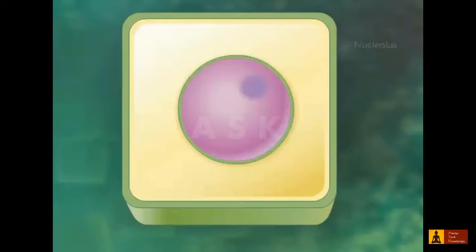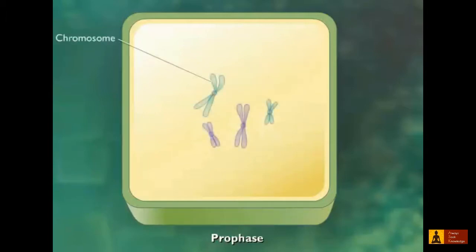Mitosis is a process of nuclear division in which the duplicated chromosomes separate to form two genetically identical daughter nuclei. During prophase, the nuclear membrane disintegrates and the nucleolus disappears. As prophase continues, the chromosomes condense and begin to appear.